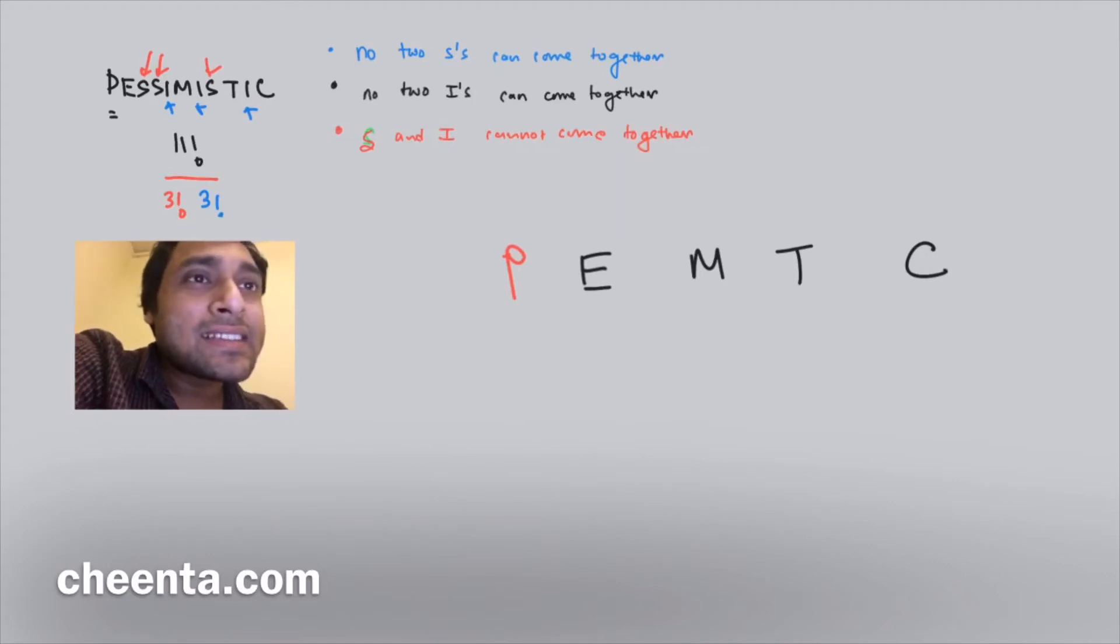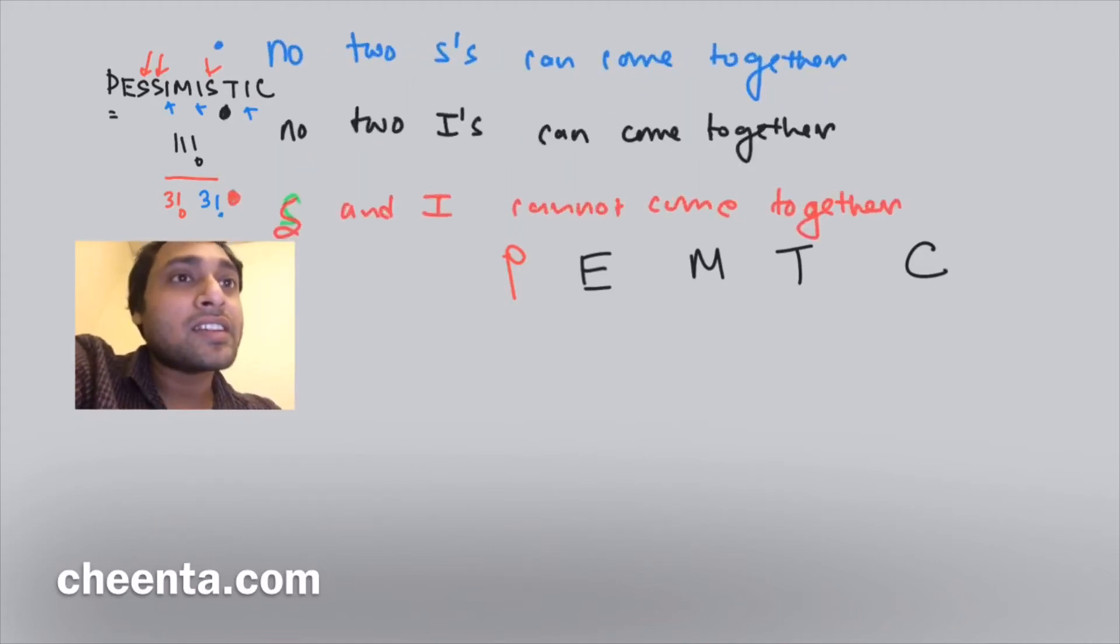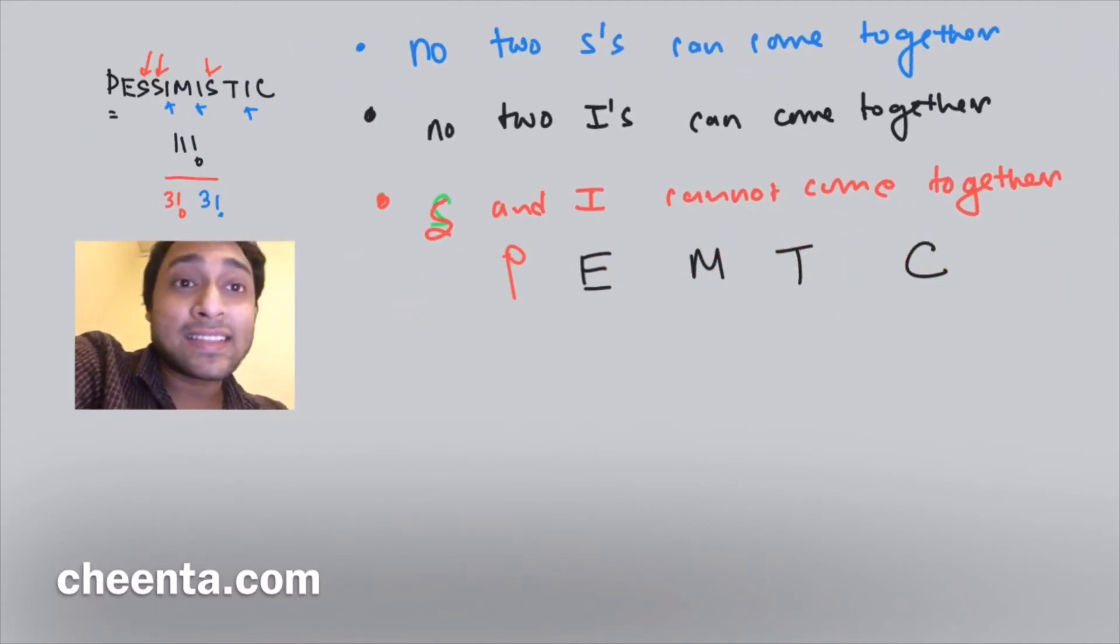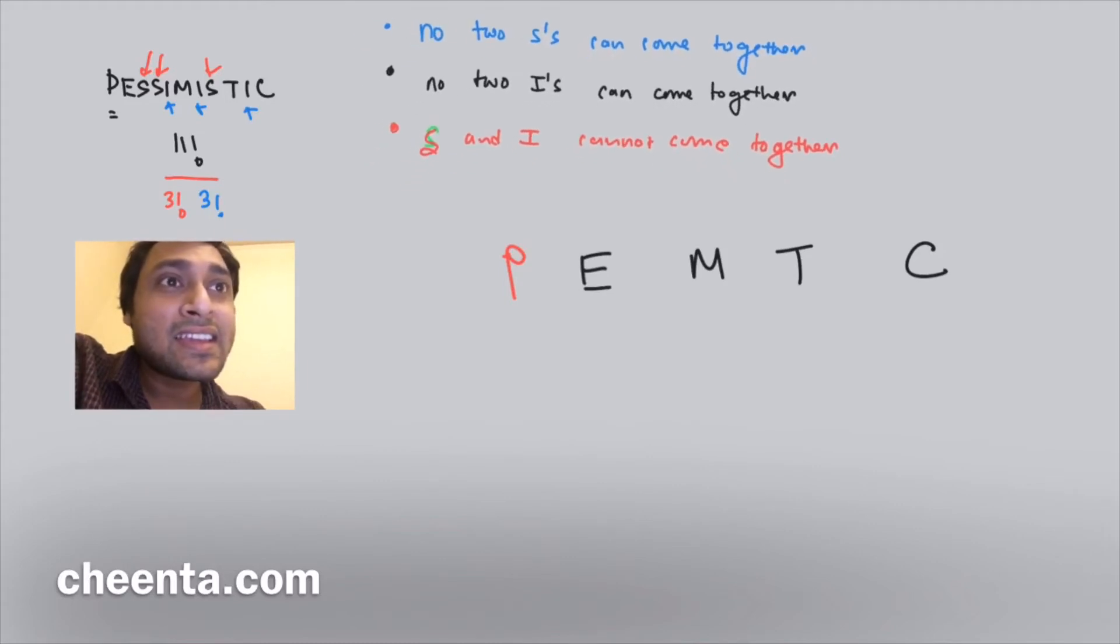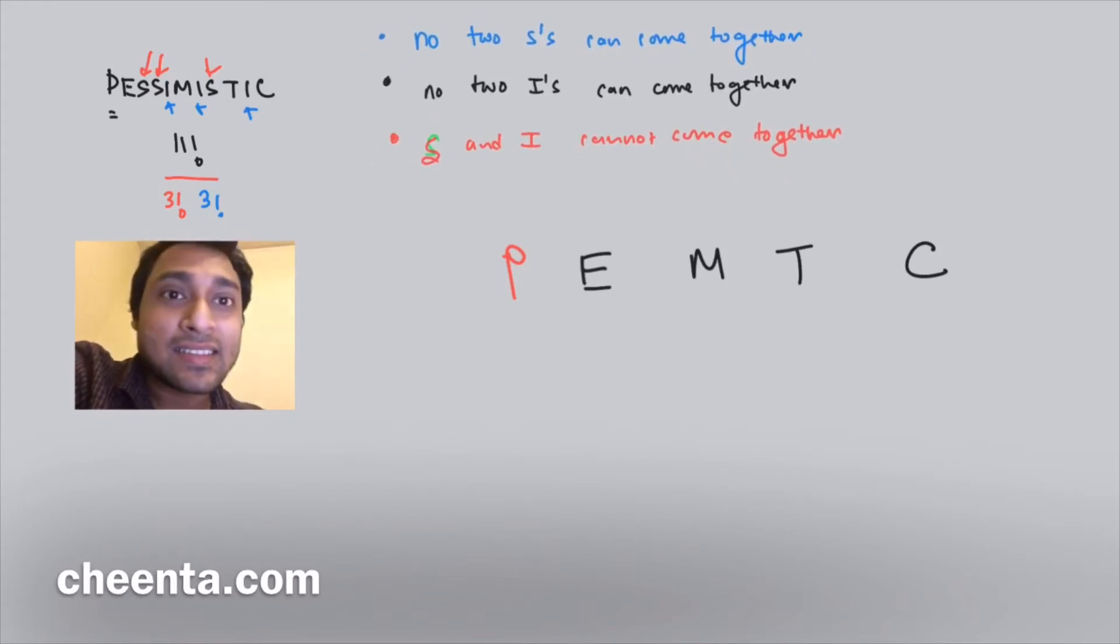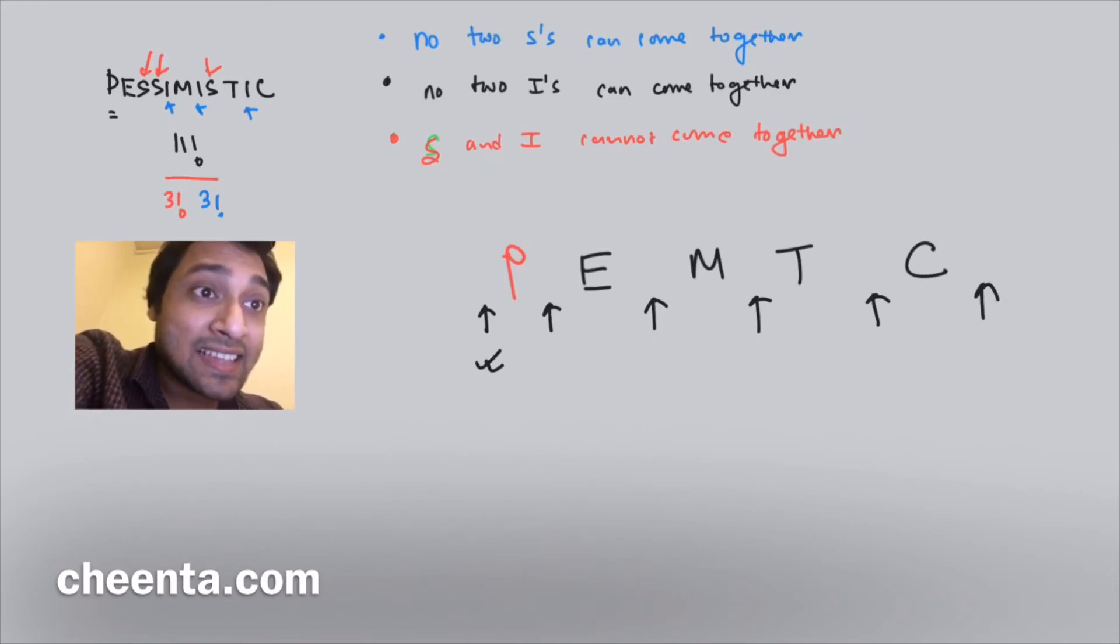Notice that what was our condition: no two S's can come together, no two I's can come together, and no S and I can come together. So really what this means is, and you have to think a little bit about this, that these S's and I's can only live in these gaps. In fact, there are exactly six gaps.